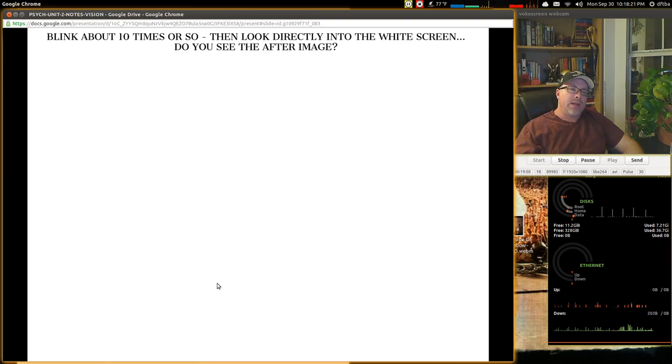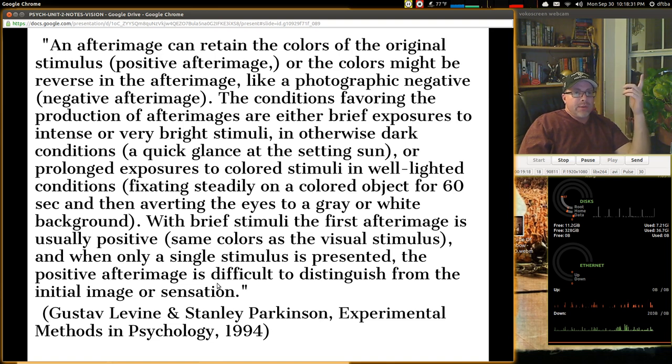Okay. Flipping it forward here, blink about 10 times or so, and then look directly at the center of the screen, the white screen, and do you see the after image? What does it look like? So an after image can retain the colors of the original stimulus, which is a positive after image, or the colors might be in reverse to the after image, like a photographic negative. We're going to see that in a second.